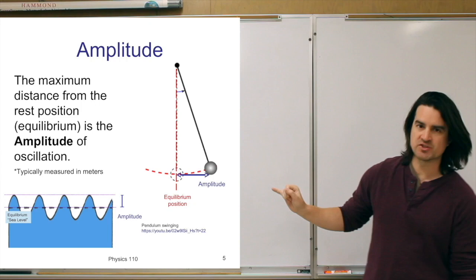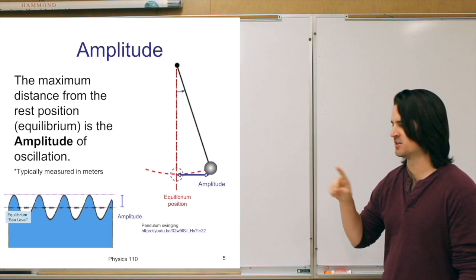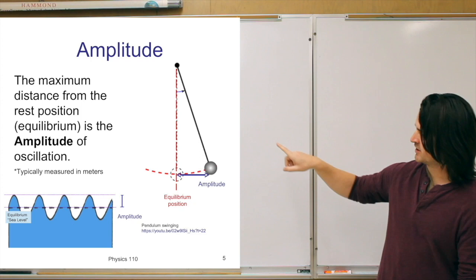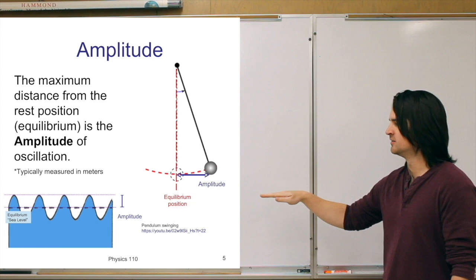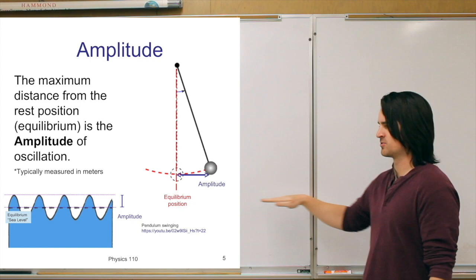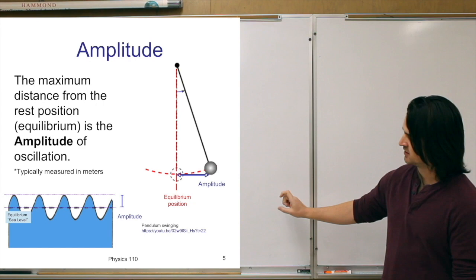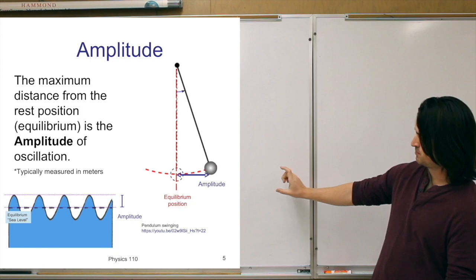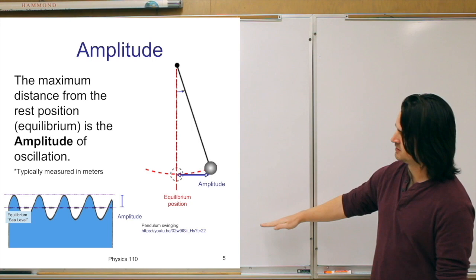Water waves are another example of oscillations. Looking at an idealized water wave where the wave peaks up and goes down, we get crests and troughs. If there were no waves, the water would be at its equilibrium position, right in the middle of those peaks and troughs. The amplitude of a water wave is measured from that equilibrium to the peak of the wave — it's the maximum displacement the material moves from the equilibrium position.